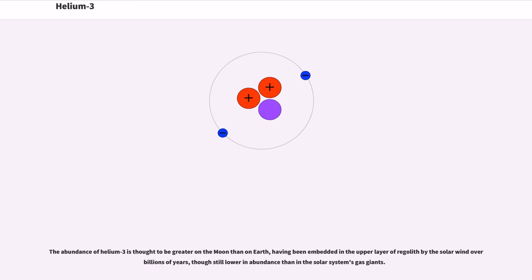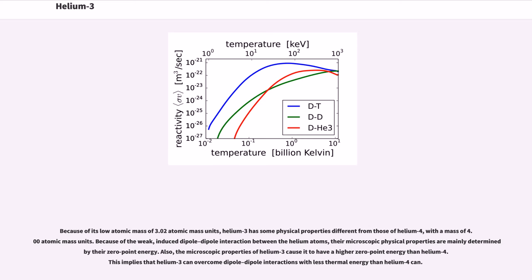The abundance of helium-3 is thought to be greater on the Moon than on Earth, having been embedded in the upper layer of regolith by the solar wind over billions of years. Because of its low atomic mass of 3.02 atomic mass units, helium-3 has some physical properties different from those of helium-4, with a mass of 4.00 atomic mass units. Because of the weak induced dipole-dipole interaction between the helium atoms, their microscopic physical properties are mainly determined by their zero-point energy. Also, the microscopic properties of helium-3 cause it to have a higher zero-point energy than helium-4.